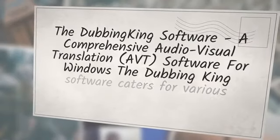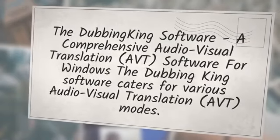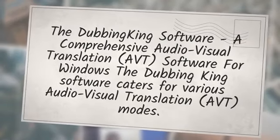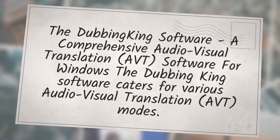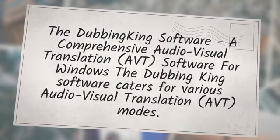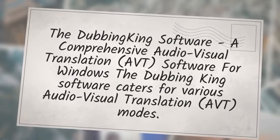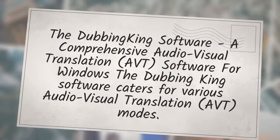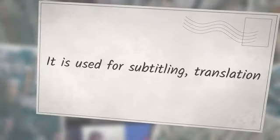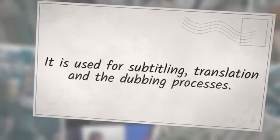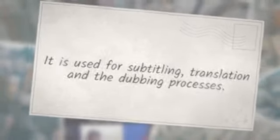The Dubbing King software is a comprehensive audio visual translation (AVT) software for Windows. The Dubbing King software caters for various audio visual translation AVT modes; it is used for subtitling, translation, and the dubbing processes.